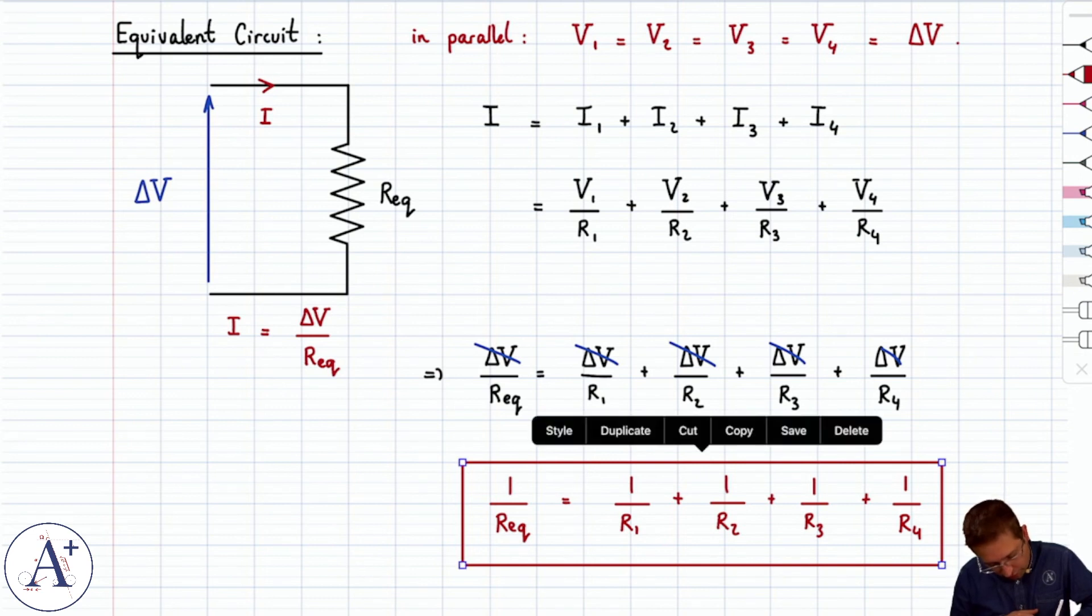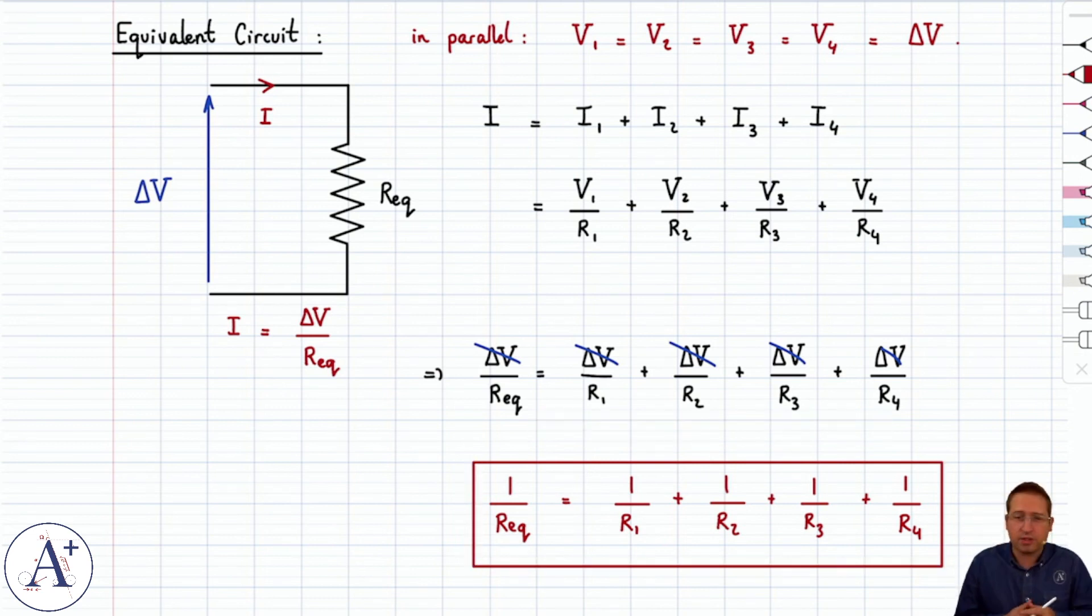So that is our formula to find the equivalent resistance for resistors connected in parallel. It's worth noting, by the way, that mathematically, you're going to get R equivalent smaller than any of the four values of resistance.